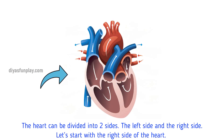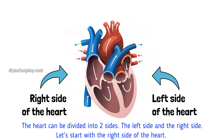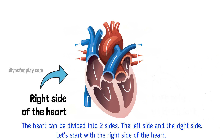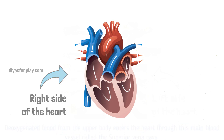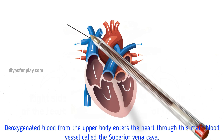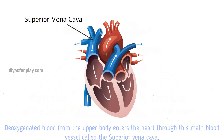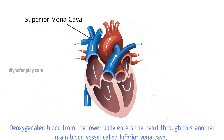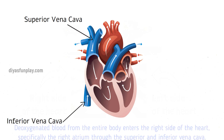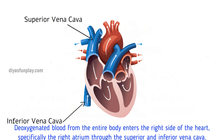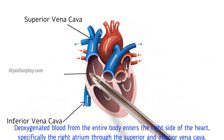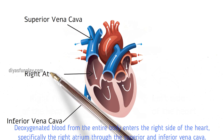The heart can be divided into two sides: the left side and the right side. Let's start with the right side of the heart. Deoxygenated blood from the upper body enters the heart through the superior vena cava, and deoxygenated blood from the lower body enters through the inferior vena cava. This deoxygenated blood from the entire body enters the right atrium.